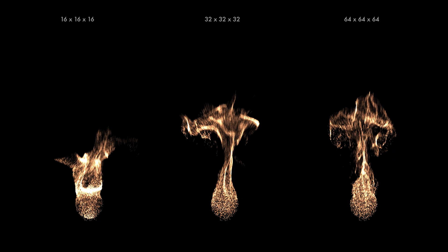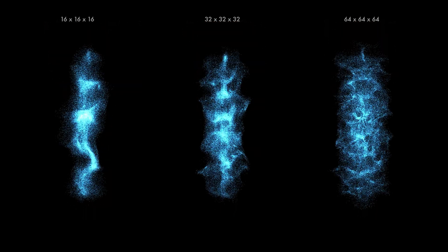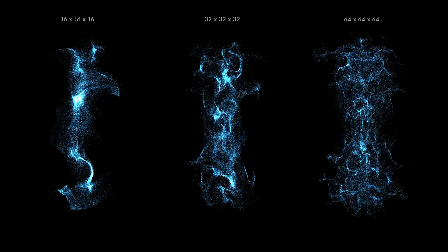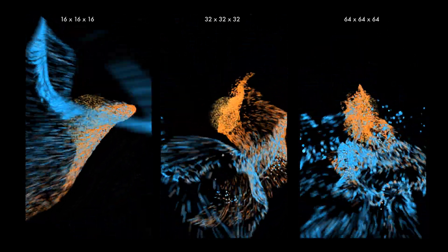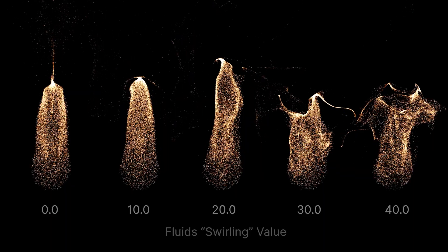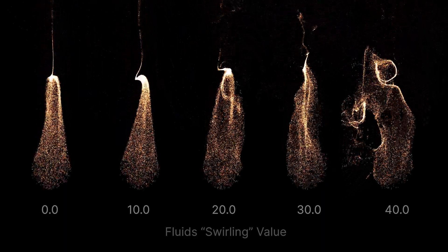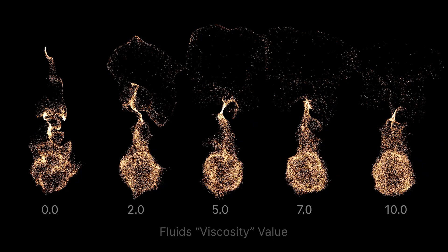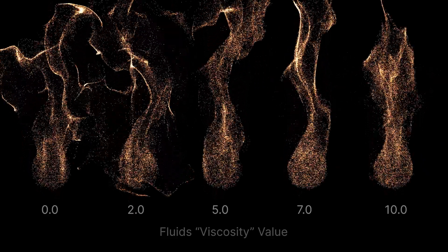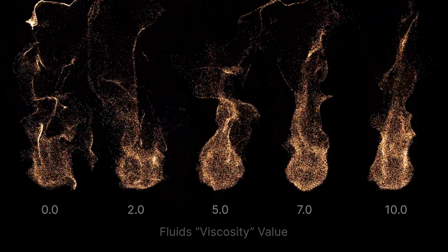With Particle Illusion, you can control the simulation detail, with lower settings giving larger, more sweeping motion. Higher settings provide more detail and are slower to calculate. You can also change the amount of swirling, or increase viscosity to restrict the particle motion, as if it's in a thicker fluid.